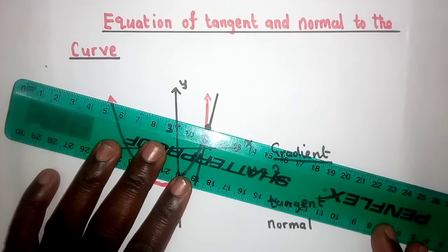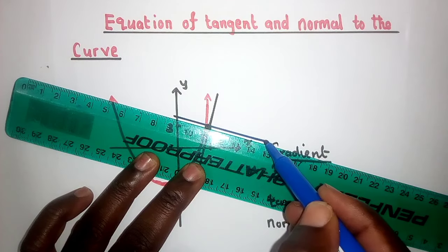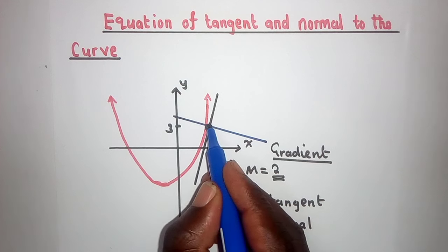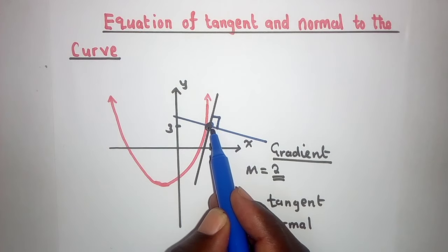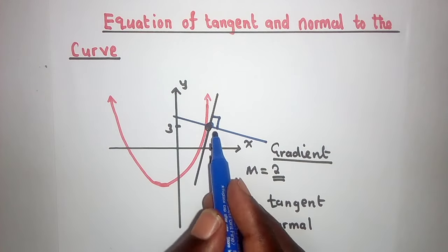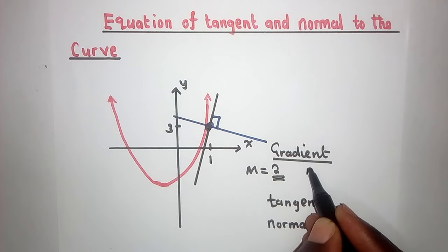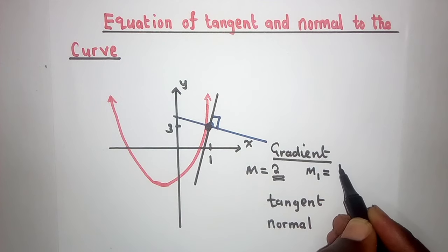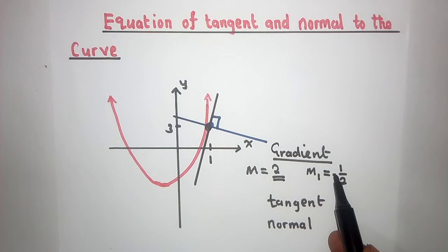Now when we talk about the normal, the normal looks like this. It will pass at this same point, but it will be perpendicular to the tangent line — meaning it will be 90 degrees. When it comes to the gradient of the normal, m1 will be equal to negative 1 over 2. You reciprocate and change the sign, so it will be negative 1 over 2.